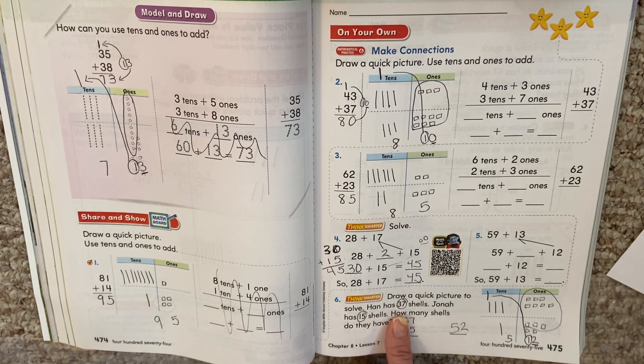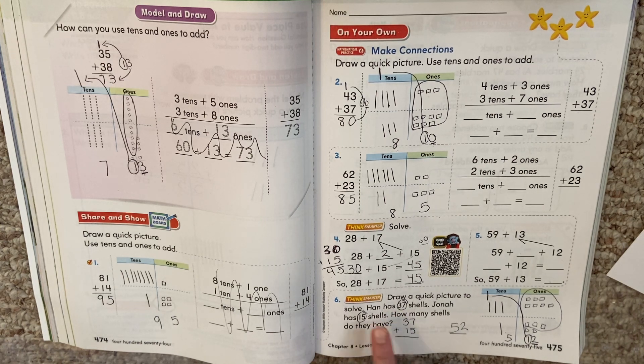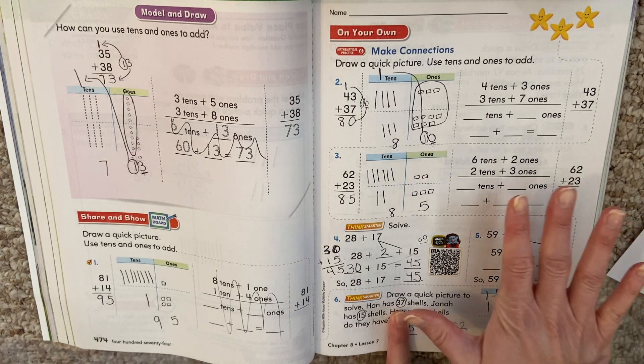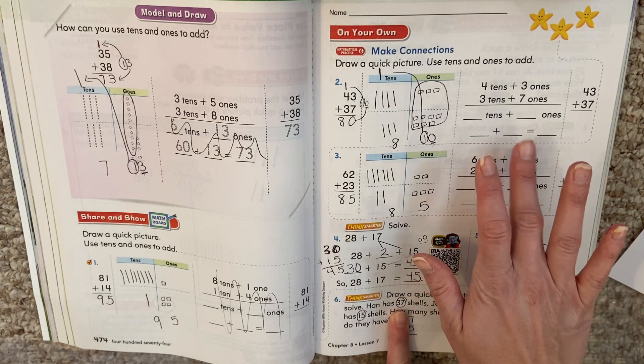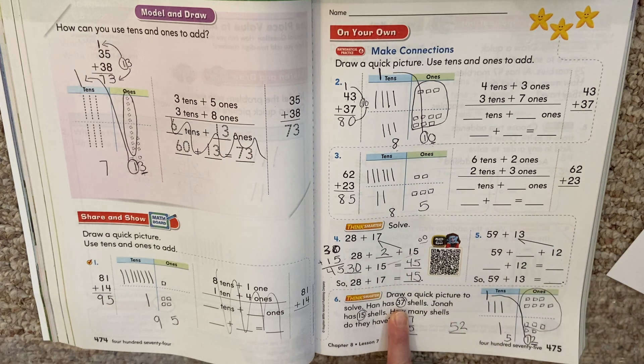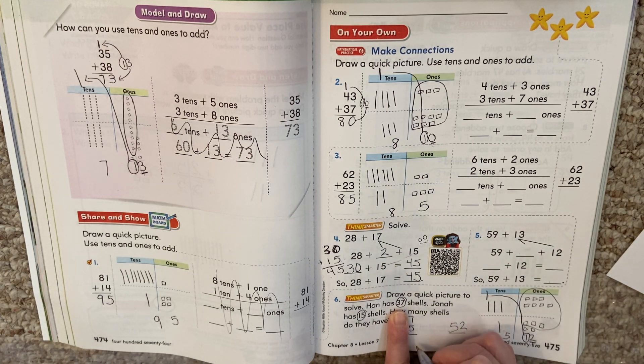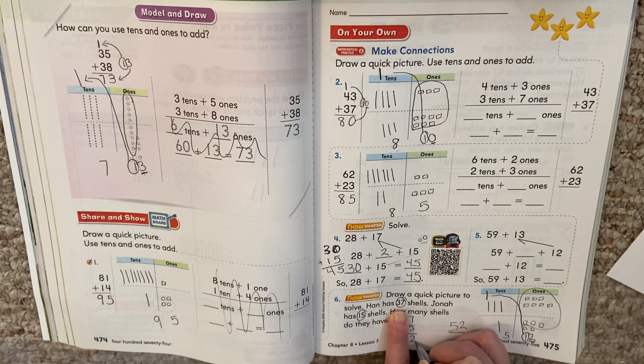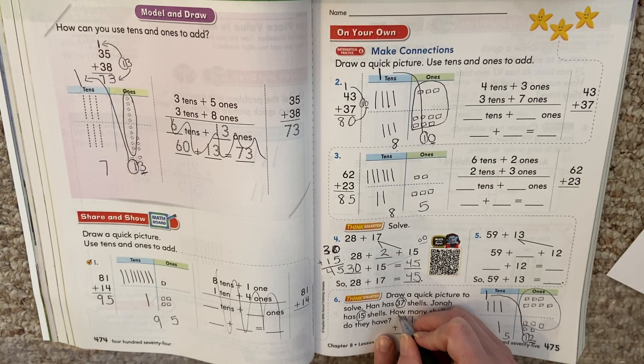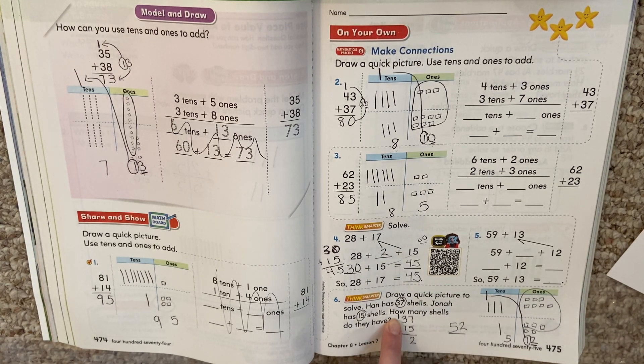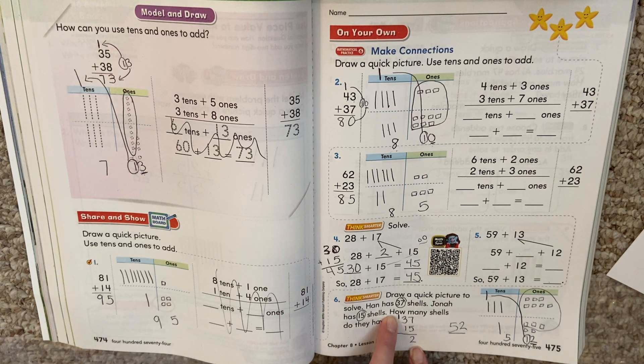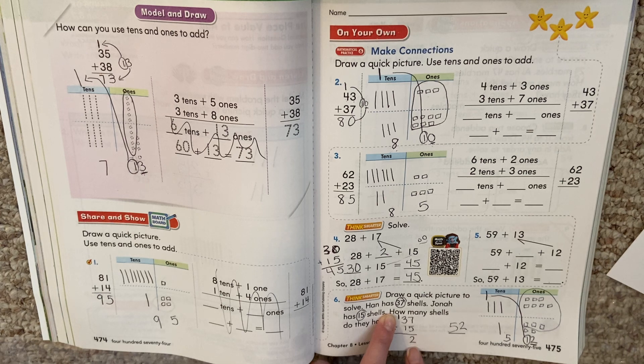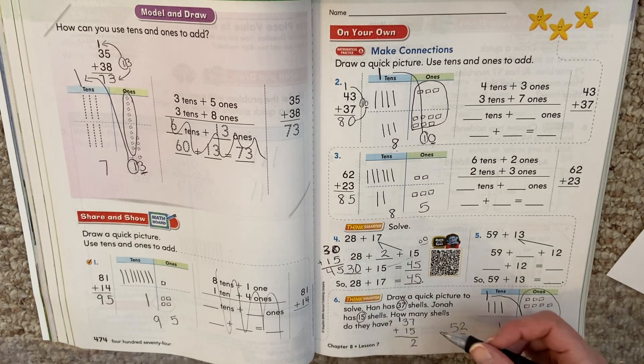And I'm just going to show you over here on this side. 7 plus 5. Well, if I have 7 and I get 5 more, 7, 8, 9, 10, 11, 12. 12 is too big, isn't it? So I have to split my number. I keep my 2 and I move my 1. Do you see how I split it? Looks like the number 12, doesn't it? A 1 and a 2.